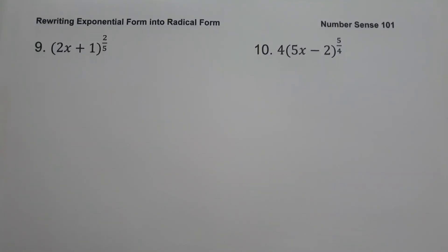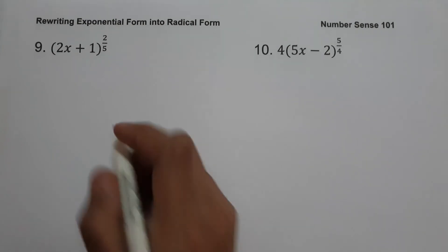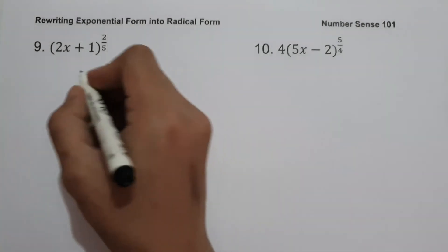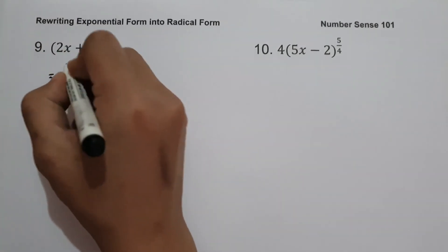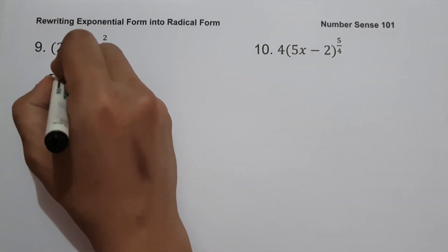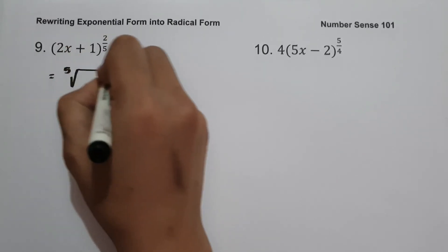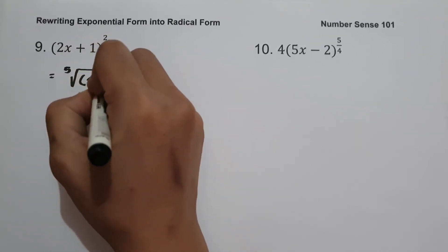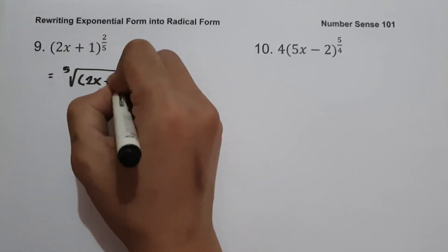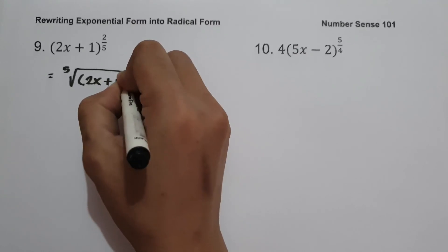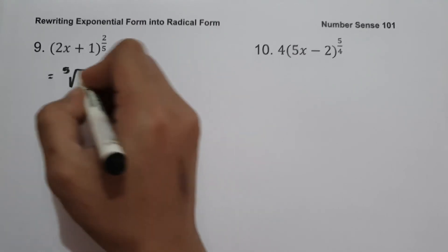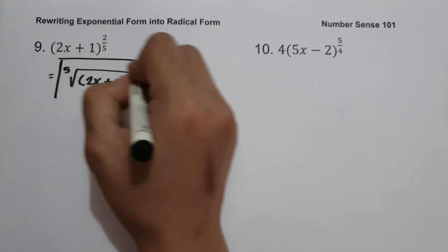On example number nine: quantity 2x plus 1 raised to 2 over 5. To write this in radical form, we have 5 as our index, giving us the 5th root of quantity 2x plus 1 squared. And this will be our answer.